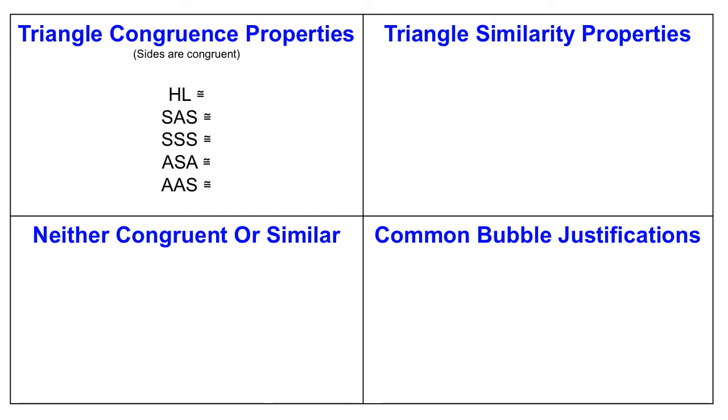To start, let's review some of the properties of congruent triangles. There's five properties total. There's HL, which stands for hypotenuse leg, side-angle-side, side-side-side, angle-side-angle, and angle-angle-side.